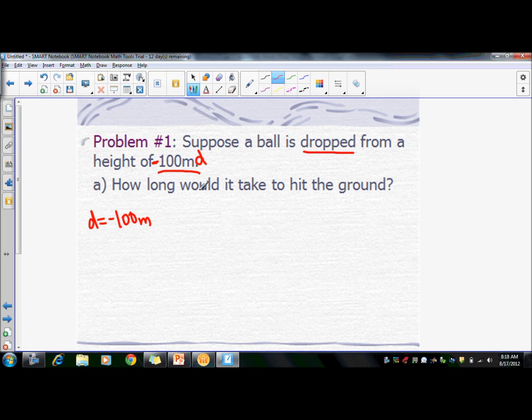One is that it's falling, and falling means that gravity is affecting it. So that would be negative 9.8 meters per second squared. And if it's dropped, that means we're just releasing it. So initially, our velocity will be zero.